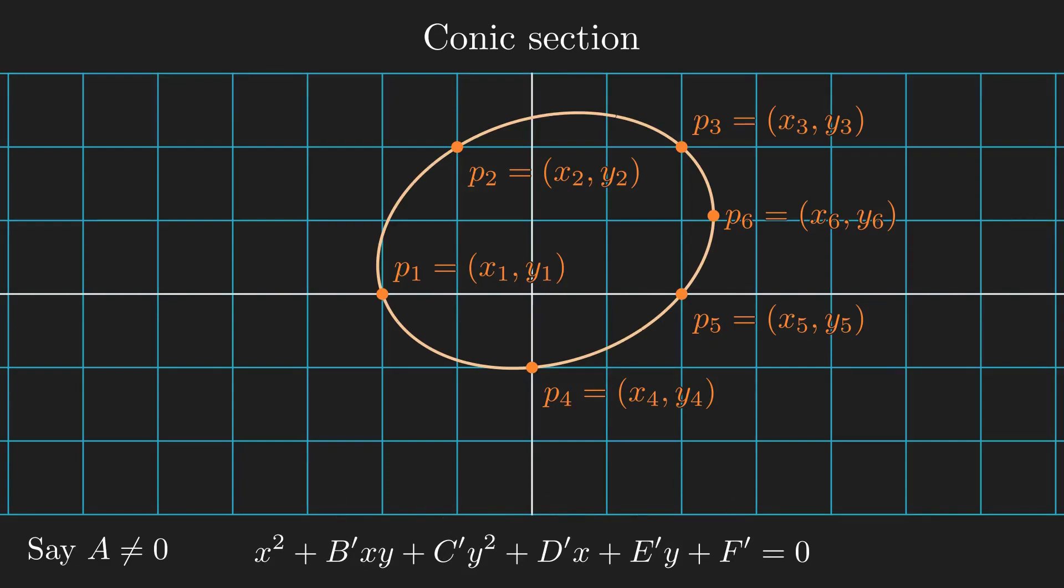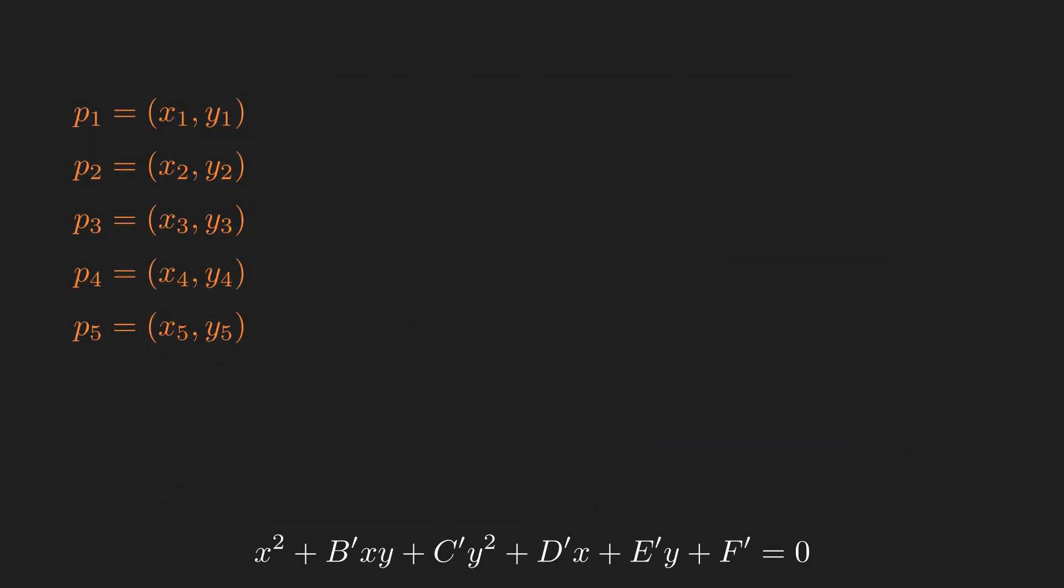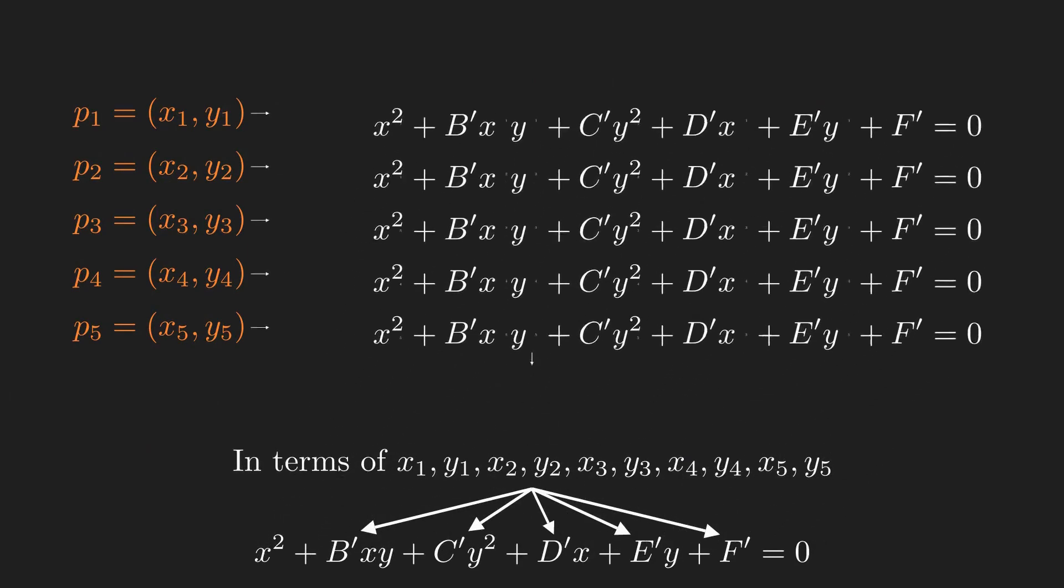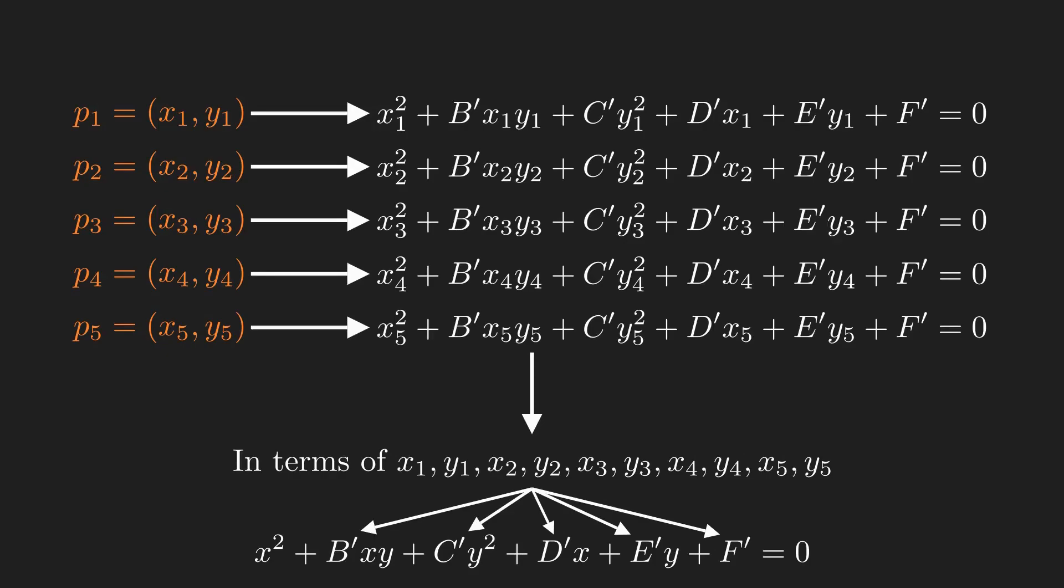Since there are five parameters, I need five arbitrary points to solve for these parameters in terms of the coordinates of the points, using these five equations. However, solving this system of equations looks way too complicated, and even if I did, the result would look too messy and be difficult to arrange to look nicer.